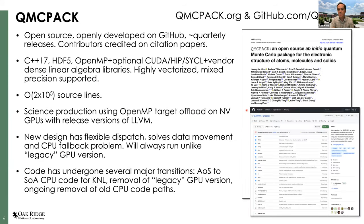QMCPack is an open source code, fully openly developed on GitHub — the develop branch is what we issue quarterly releases from. As an open source code, we make a large effort to credit all contributors. For example, when we wrote the first citation paper for QMCPack a few years ago, we had 48 co-authors because we were able to track everyone who had touched the code since we'd always been in version control.